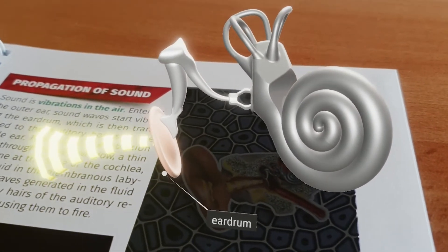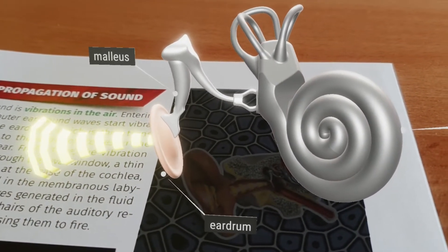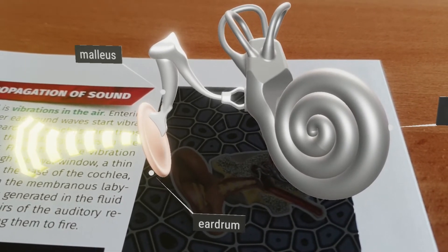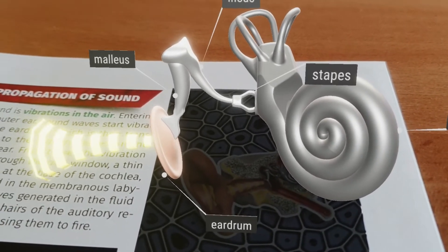The first auditory ossicle, the malleus, is directly attached to the eardrum. It transmits the vibrations to the incus and the stapes.